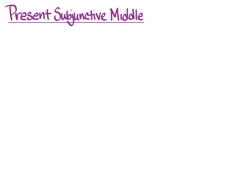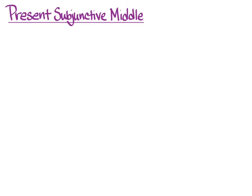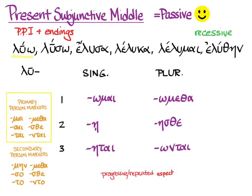You form the present subjunctive middle exactly the way you form the present subjunctive passive. All things present, as you know, are from the first principal part. We put on the primary middle-passive person markers, we give it recessive accent, and we know that it has progressive repeated aspect. Remember, you can't do a translation until you have a context when you've got the subjunctive. But don't forget that if it is middle instead of passive, you'll need to give it a middle translation.